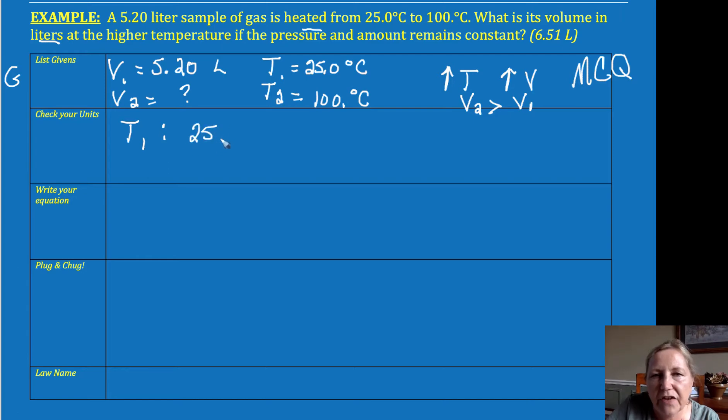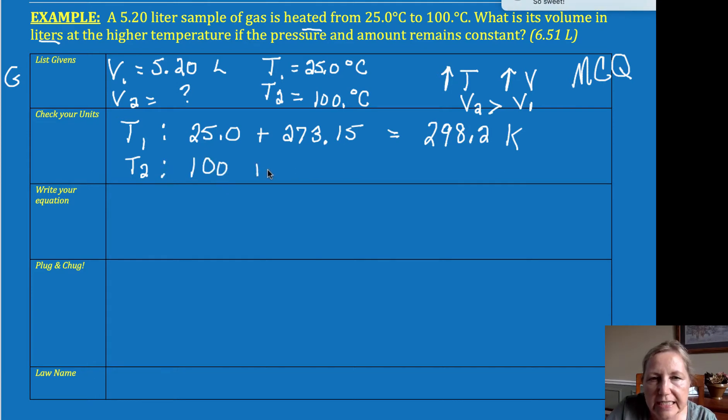So T1 is 25.0. You must listen to your teacher or your professor about how to convert and whether to carry the 0.15. I will often do that, and then I want to round to the correct sig figs. So this is 298.2 Kelvin. And then the next one, T2, is going to be 100 degrees Celsius plus 273, and so that's going to give me 373 Kelvin.